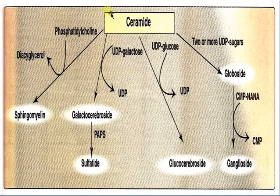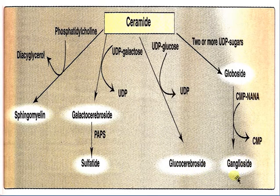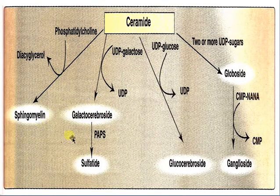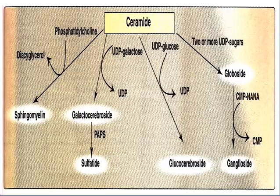Ceramide is the precursor for sphingomyelins, galactocerebrosides, glucocerebrosides, and gangliosides — as well as sulfated forms like sulfated galactocerebrosides. These are the various compounds formed from ceramide.